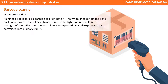We'll start with a barcode scanner. Despite the fact you don't need to know the technical physical intricacies of how it works, we'll very briefly describe what each device does to set some context. A barcode scanner shines a red laser at a barcode to illuminate it. The white lines reflect the light back, whereas the black lines absorb some of the light and reflect less. The strength of the reflection from each line is interpreted by a microprocessor and converted into a binary value.